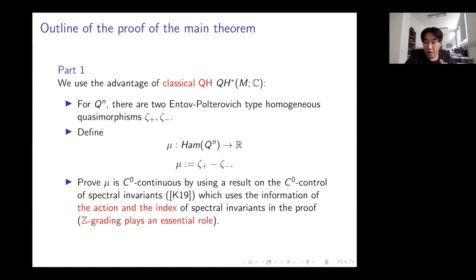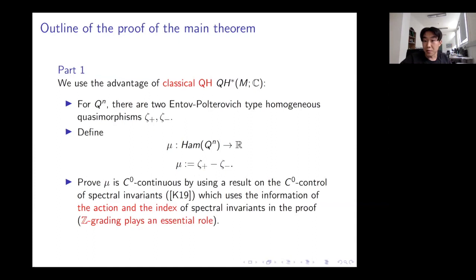Hofer continuity follows immediately because Entov–Polterovich type quasimorphisms are always Hofer-Lipschitz continuous, so their difference is also Hofer-Lipschitz. For C⁰ continuity, this follows from an earlier result of mine about C⁰ control of spectral invariants. To prove this, I need to look at both the action and the index of spectral invariants simultaneously, so the ℤ-grading plays an essential role — that's why I work in the classical setting in Part 1.